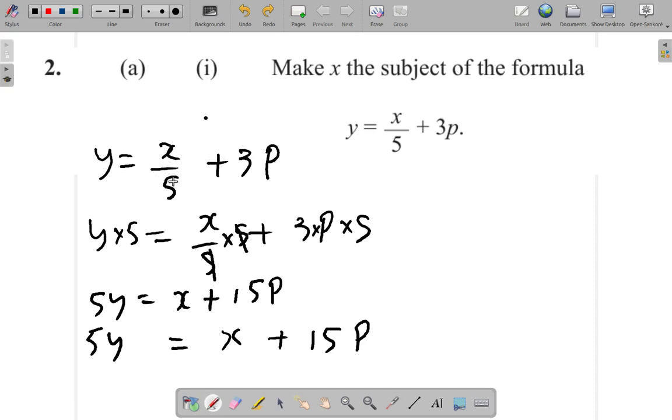What I did first was to get rid of 5. I am closer to getting x equal because I no longer have a 5, but now I have x plus 15p. I want to get rid of 15p so that I have x alone equal.